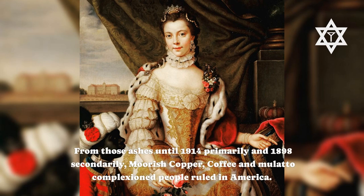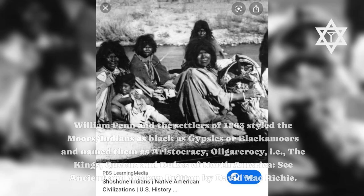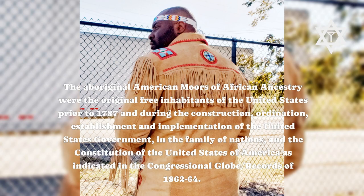About 13,000 years ago, during earth changes, a Moorish amalgamated Moros mulatto people arose that did not see all other people as fellow human beings or true man. From those ashes, until 1914 primarily and 1898 secondarily, Moorish copper, coffee, and mulatto complexion people ruled in America. William Penn and the settlers of 1863 styled the Moors — Indians — as black as gypsies or Blackamoors and named them as aristocracy, oligarch, roysi — i.e., the kings, queens, and dukes of North America. The aboriginal American Moors of African ancestry were the original free inhabitants of the United States, as indicated in the Congressional Globe records of 1862–64.